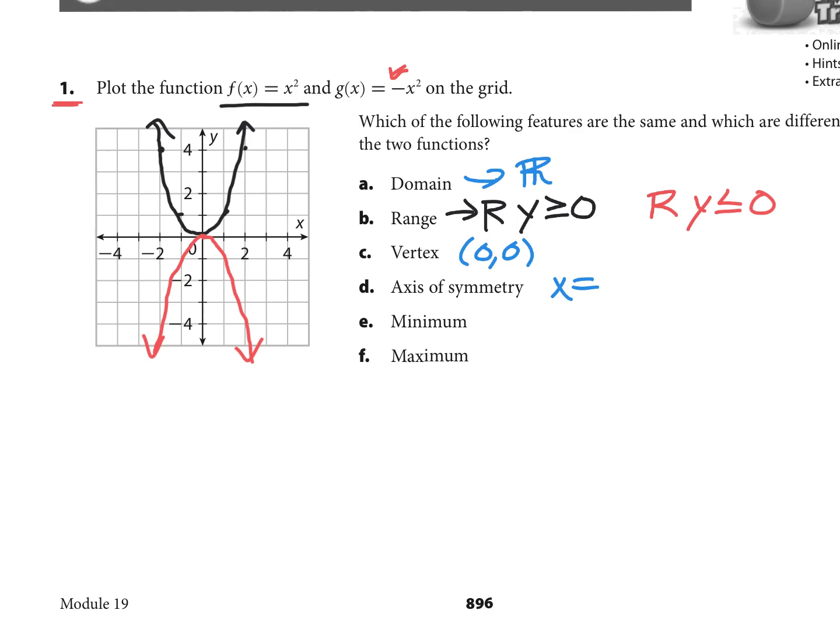Our minimum and maximum have changed because our parent function opens up, it has a minimum. The minimum value is y = 0, the minimum point is at (0,0). This is value, this is the point. Our point is always going to be our vertex, it's just depending on if it's a minimum or maximum. For our reflection, it becomes a maximum because it is now going down.